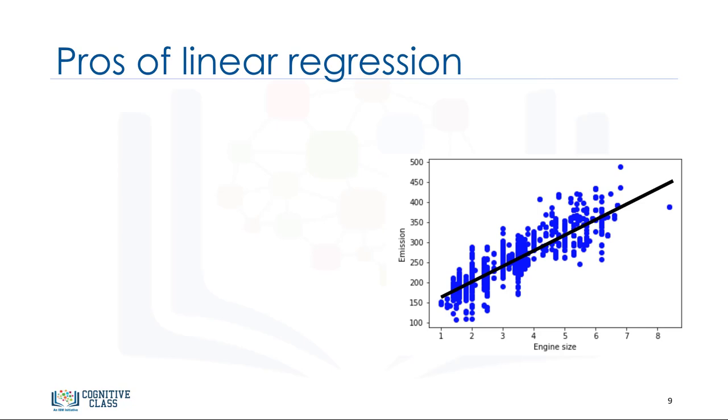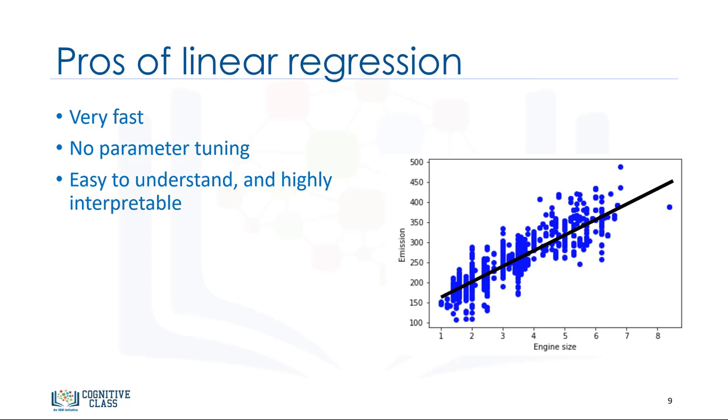Let's talk a bit about why linear regression is so useful. Quite simply, it is the most basic regression to use and understand. In fact, one reason why linear regression is so useful is that it's fast. It also doesn't require tuning of parameters. So, something like tuning the k parameter in k nearest neighbors or the learning rate in neural networks isn't something to worry about. Linear regression is also easy to understand and highly interpretable. Thanks for watching this video.